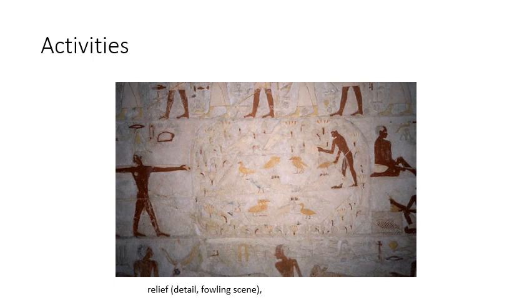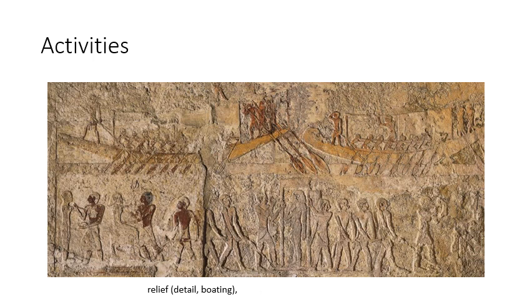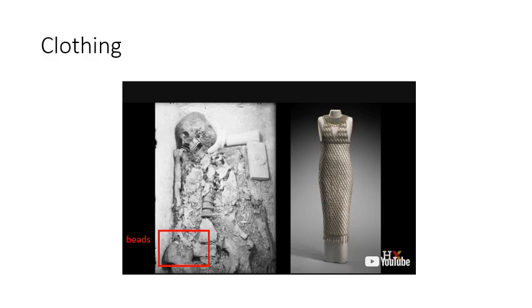What about the different activities? I can learn about what kind of animals they ate through these activities. For example, these are hunting ducks and that sort of thing in the marshes. And here I see people going out on boats. I can learn what kind of boats they had, how they were built, how they propel these boats, and how many people they hold.